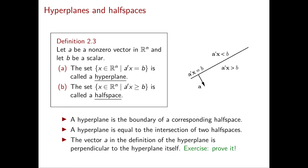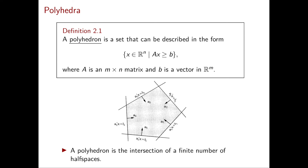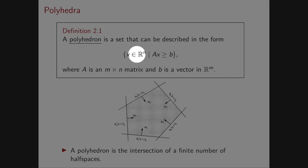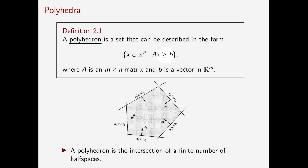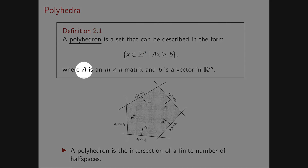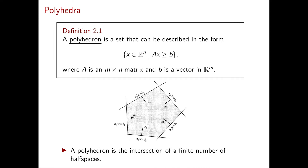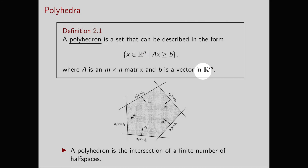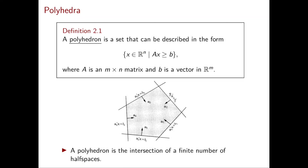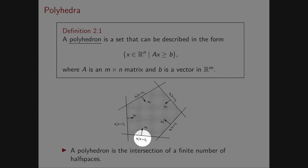A polyhedron is a set of points in Rⁿ that satisfies a finite system of linear inequalities Ax ≥ b. A must have n columns and a finite number m of rows, giving m inequalities; b is correspondingly a vector in Rᵐ. Directly from the definition, a polyhedron is the intersection of a finite number of half spaces. In this 2D example, our polyhedron is defined by 5 linear inequalities, so n = 2 and m = 5.